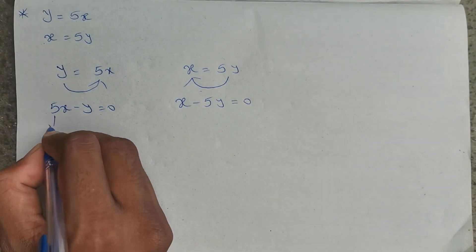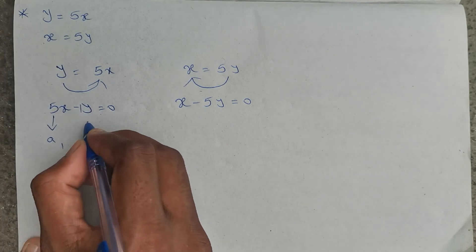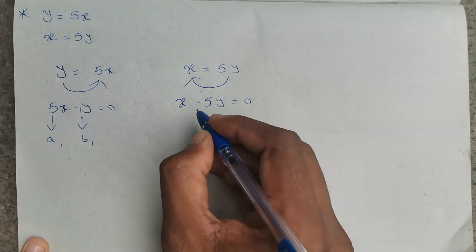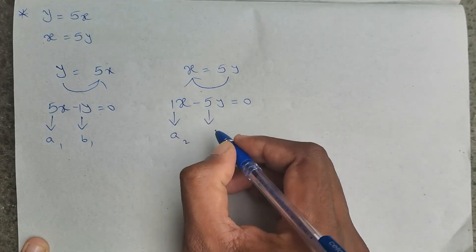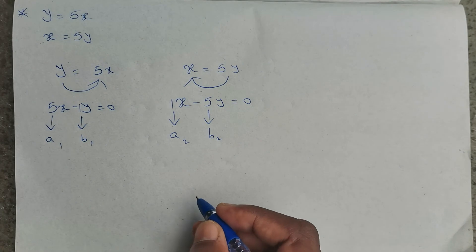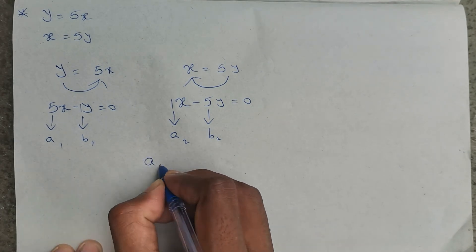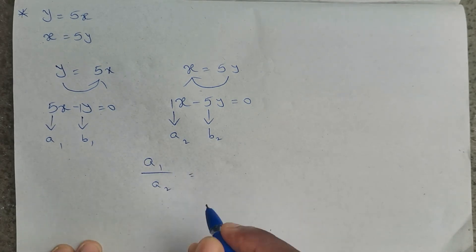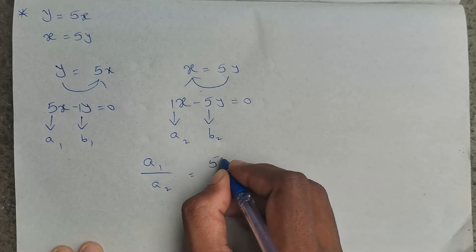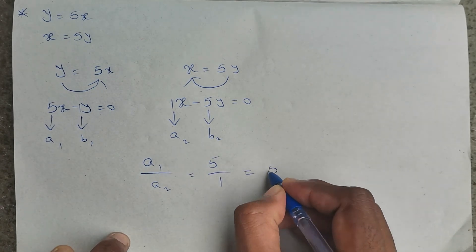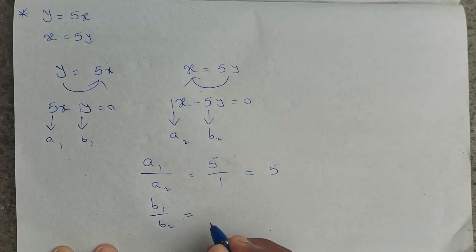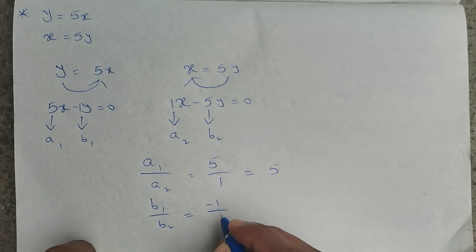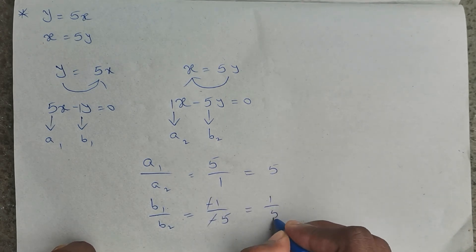Here the x coefficient is 5, so a1 equals 5; the y coefficient is minus 1, so b1 equals minus 1. The x coefficient in the second equation is 1, so a2 equals 1; the y coefficient is minus 5, so b2 equals minus 5. a1 by a2 is 5 by 1, which equals 5. b1 by b2 is minus 1 divided by minus 5 — the negatives cancel — leaving 1 by 5.